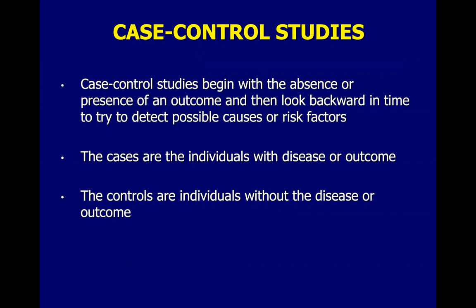The next step would be to do a case control study. A case control study starts with the presence or absence of the outcome. Using our example — the patient who has acute liver failure and was exposed to herbal medication — the liver failure is the outcome and the herbal medication is the exposure. Research is really about establishing whether there is a real relationship between the exposure and the outcome. Case control studies start with the presence or absence of the outcome and then look backwards in time to try to detect possible causes or risk factors.